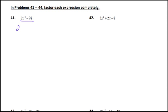When factoring, you should always remember to take the greatest common factor out first. That would be your first step at all times. This particular problem has a common factor of 2. So I'm going to take the 2 out and I'll need an a squared and then minus 49, because 2 times 49 is 98.